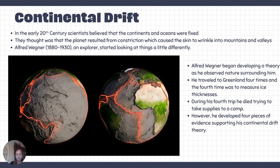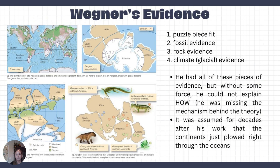Unfortunately, before Wegener was able to push forward a lot of his evidence and his theory, he died on his fourth expedition to Greenland. But he was able to put in writing four pieces of evidence that supported his theory. The first one is a puzzle piece fit. If you look at a map of the world, you can see how some continents would fit together — kind of like puzzle pieces. You can cut out the different continents and piece them together to see how they would fit.